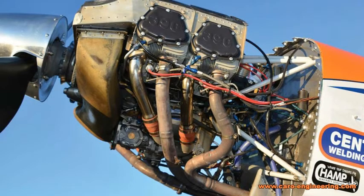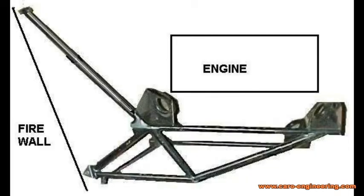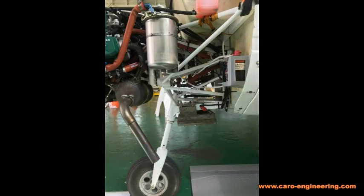The loads on the engine mount and its attachment at the firewall will depend on the mass of the engine and the load factor that the airplane is designed for. But mass loads are not the only loads. Additional loads may be introduced into the engine mount if a nose gear is attached to it. The engine mount structure must transfer those loads into the fuselage, typically at the firewall bulkhead. The engine mount loads and therefore its weight will be lowest the closer the engine can be mounted to the fuselage structure.